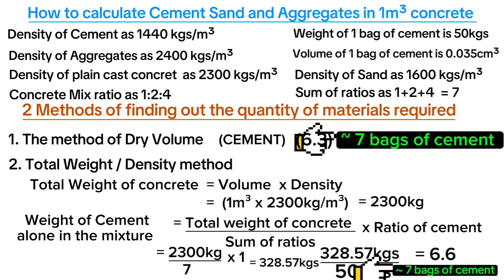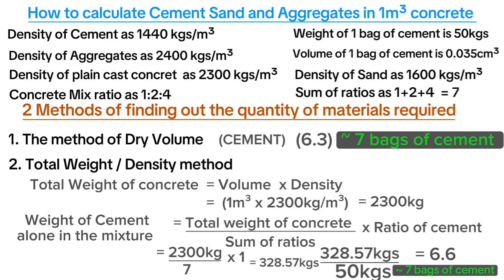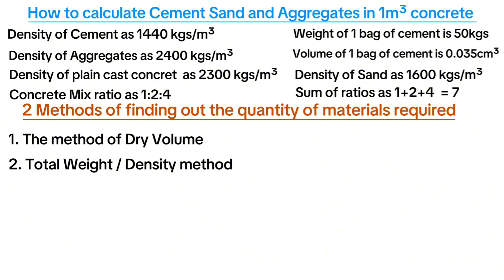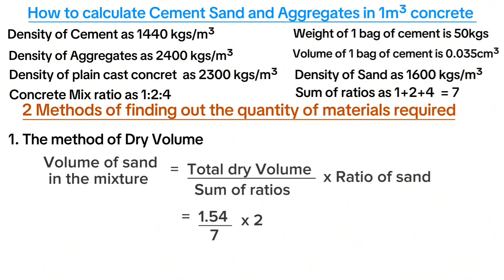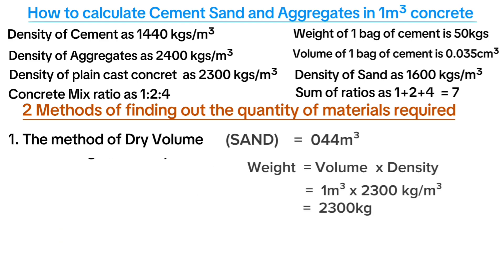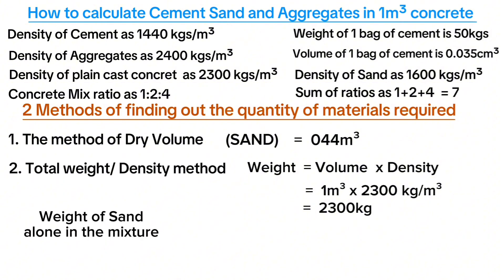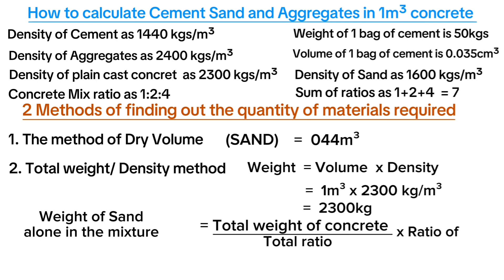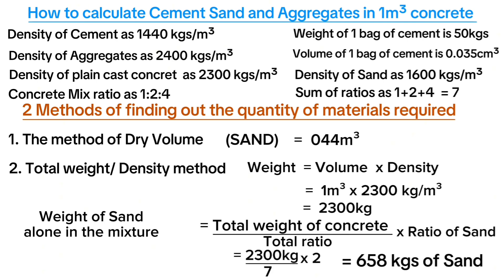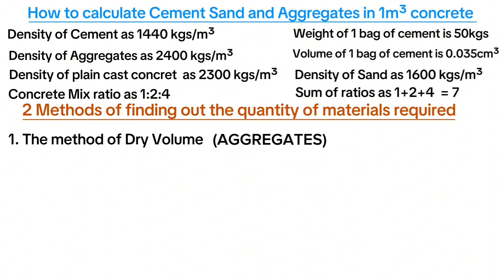Both methods give the same answer. The method of total weight or density gives a slightly higher figure, which means it is more appropriate. To find the quantity of sand, using the dry volume method gives a volume of 0.44 cubic meters. With the weight method, weight of sand equals total weight of concrete divided by total ratio, multiplied by the sand ratio, giving 658 kilograms of sand.